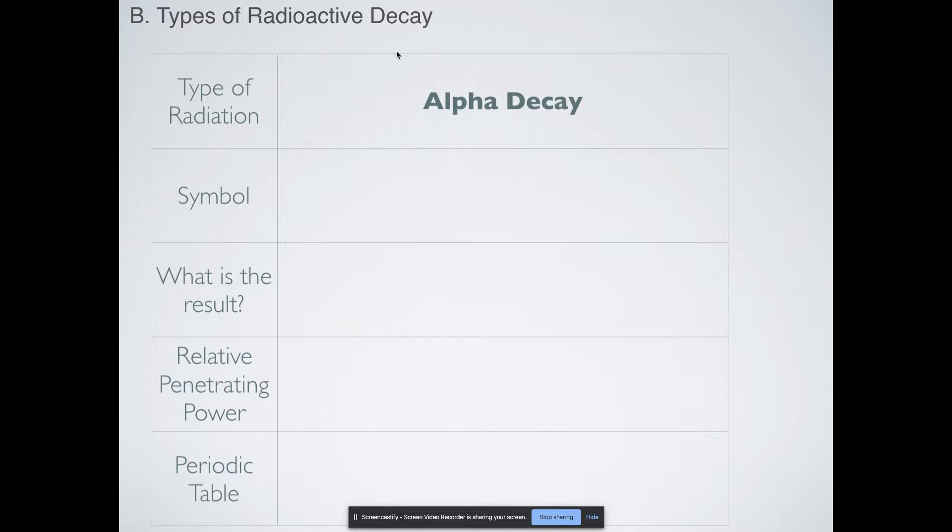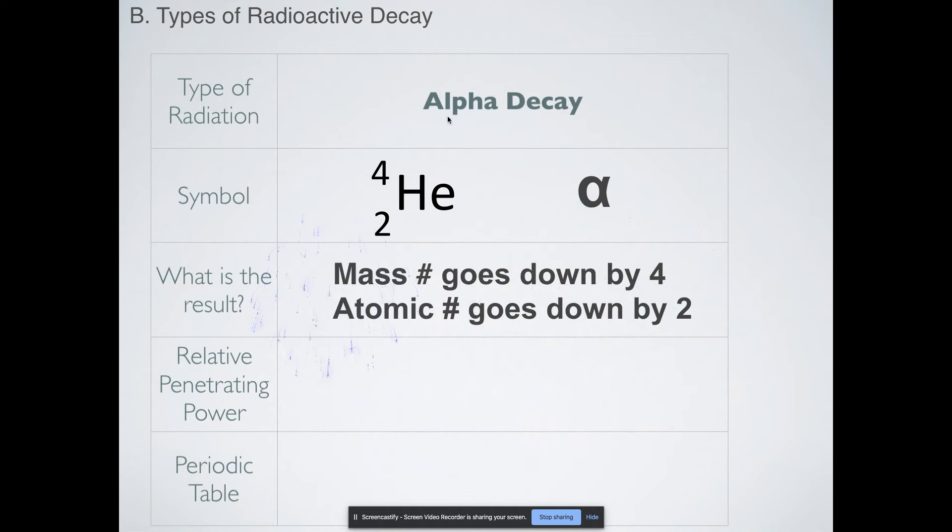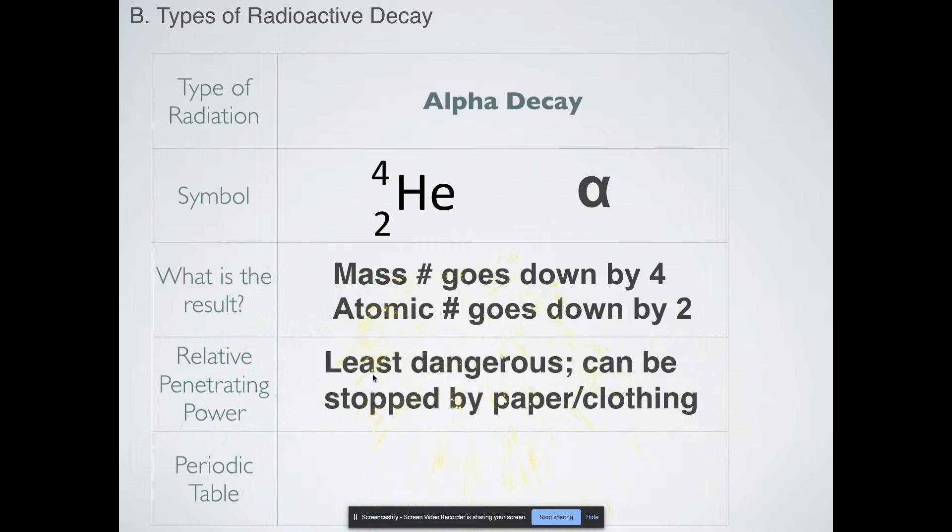Let's talk about the different types of radioactive decay. There are more than three types, but these are the three that you need to be aware of. So we have alpha decay. Alpha decay can be written in one of two ways. You can either write it with just the symbol alpha or the preferred way is to write it as this isotope notation for helium. So you've got four for the mass number, two for the atomic number, and then that element would be helium. What is the result of alpha decay? Your mass number is going to go down by four. Your atomic number is going to go down by two. Alpha decay is the least dangerous type of radiation, and it can be stopped by almost anything, including a single piece of paper or a piece of clothing. So on the periodic table, you always move two elements backwards when you see alpha decay.